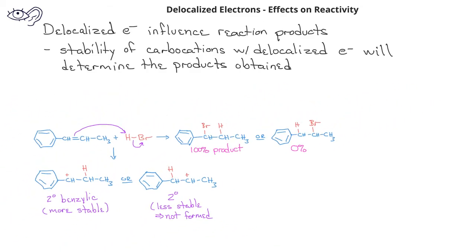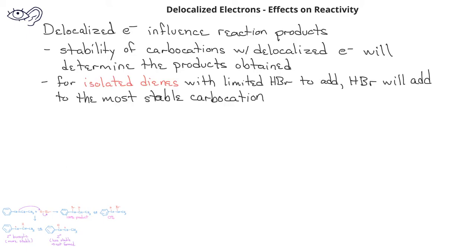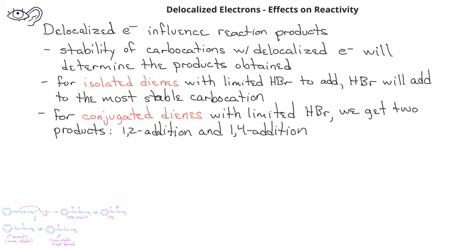In general, we can see differences between isolated dienes and conjugated dienes, especially if we have a limited amount of hydrogen bromide or other hydrogen halide compounds present. For an isolated diene with just one equivalent of hydrogen bromide present, it will add to the carbon-carbon double bond that results in the most stable carbocation. However, if we have a reaction with a conjugated diene and a limited amount of electrophile present, we'll get a combination of products. These are called 1,2-addition and 1,4-addition.